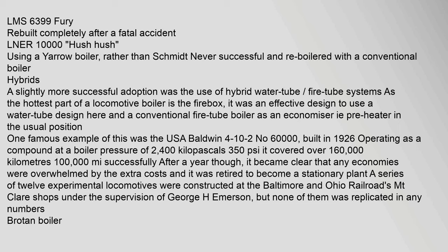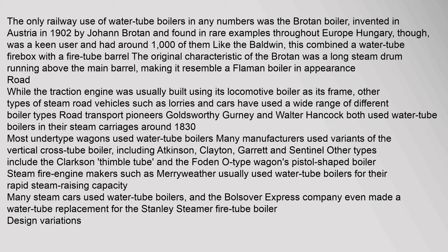One famous example was the USA Baldwin 4-10-2 No. 60000, built in 1926 and operating as a compound at a boiler pressure of 2400 kPa. The only railway use of water tube boilers in any numbers was the Brotin boiler, invented in Austria in 1902 by Johann Brotin, found in examples throughout Europe. Hungary was a keen user and had around 1000 of them. Like the Baldwin, it combined a water tube firebox with a fire tube barrel. The original characteristic of the Brotin was a long steam drum running above the main barrel.